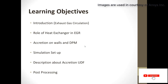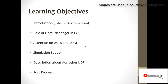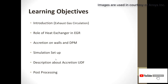The learning objectives are: first, an introduction to exhaust gas recirculation and its advantages; second, the role of the heat exchanger in exhaust gas recirculation; third, accretion on walls — meaning the deposition of soot particles or any particles on the walls; fourth, the discrete phase method (DPM) simulation setup in ANSYS Fluent; fifth, a description of the accretion UDF used to calculate the amount of particles deposited on the walls; and finally, post-processing.